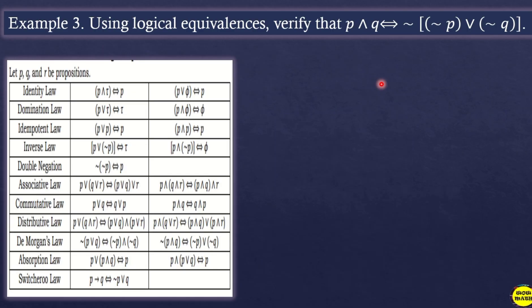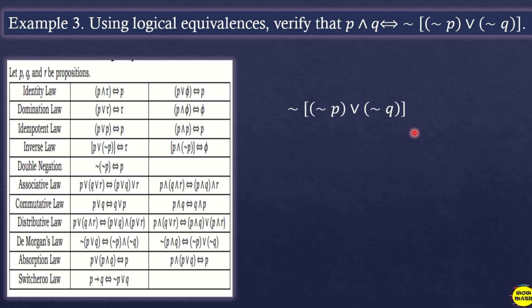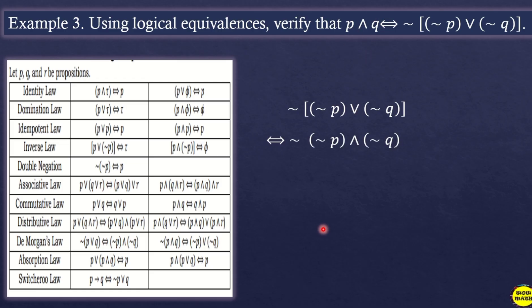For Example 3: Using logical equivalence, verify that 'p and q' is equivalent to the negation of '(not p or not q)'. We start with the given: ¬(¬p∨¬q). We need to show this simplifies to p∧q. First, we apply De Morgan's Law.